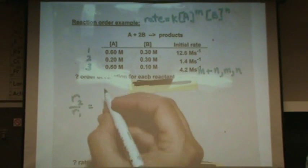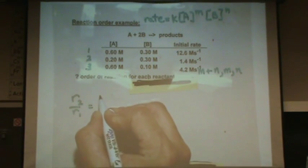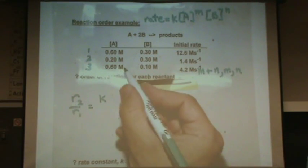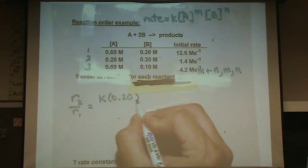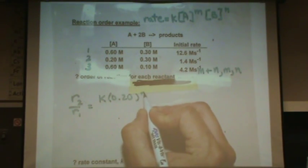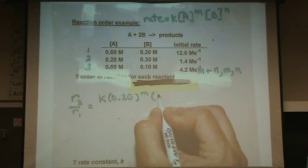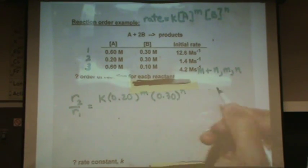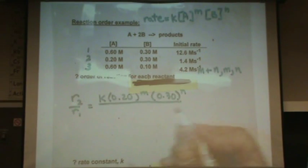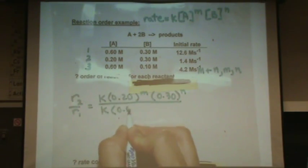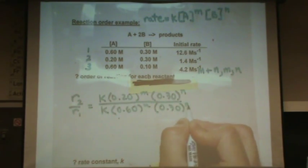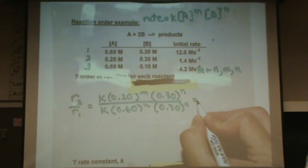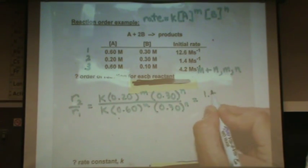What you're going to do is say what if I compare rate two and rate one. What I'm going to do with those two rates is write out the rate laws. So for rate two it's K times the concentration of A which is 0.20, I'm reading it right off the table, to the m power times the concentration of B, 0.30, to the n power, all divided by rate one: K times 0.60 to the m power and 0.30 to the n power. And that's going to equal 1.4 over 12.6.